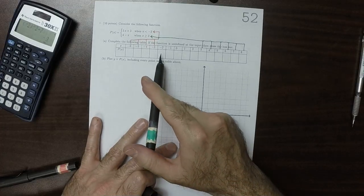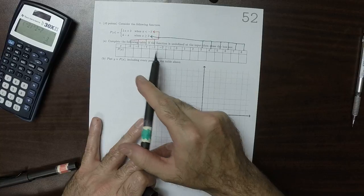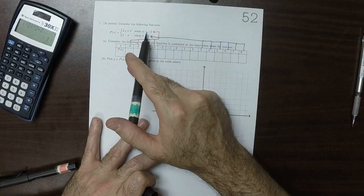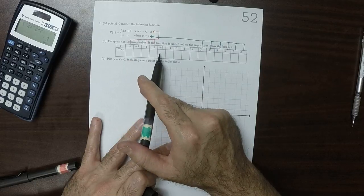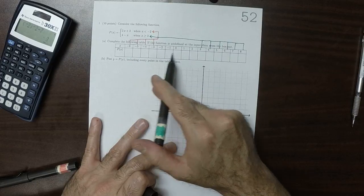So in particular, negative 2 is not less than negative 2, so it's not red, and it's not greater or equal to 3, so it's not green either, and that's true of all these points.